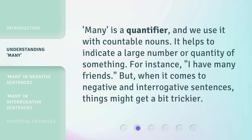'Many' is a quantifier, and we use it with countable nouns. It helps to indicate a large number or quantity of something. For instance, 'I have many friends.' But when it comes to negative and interrogative sentences, things might get a bit trickier.